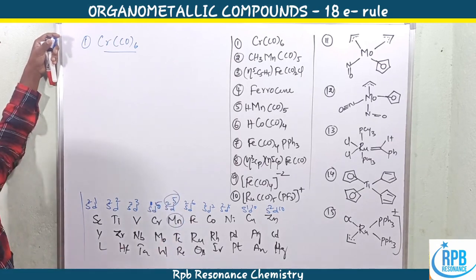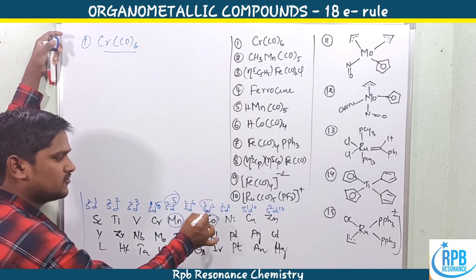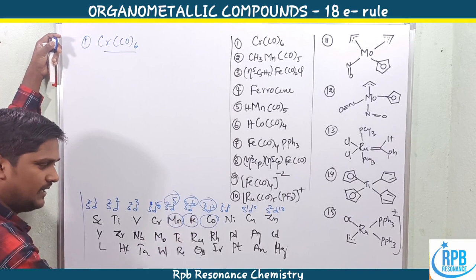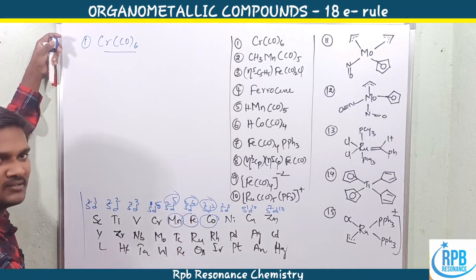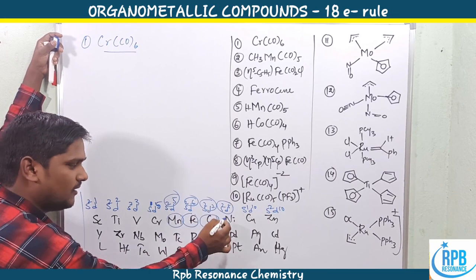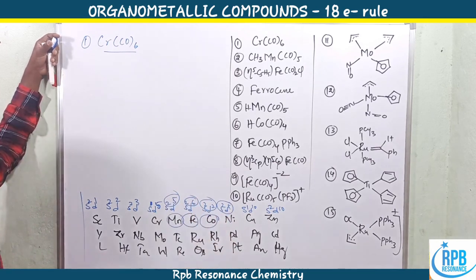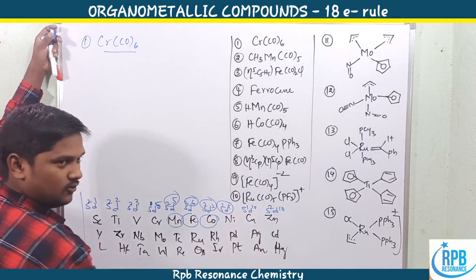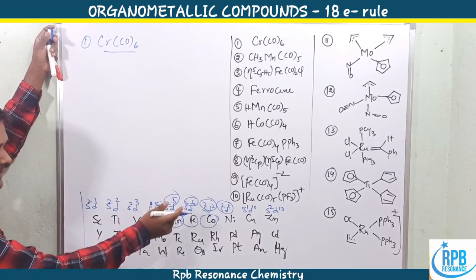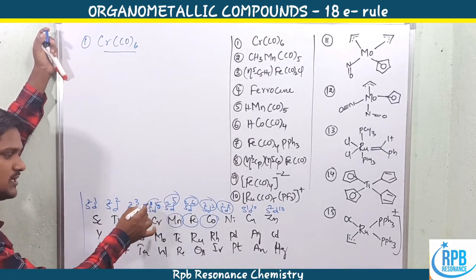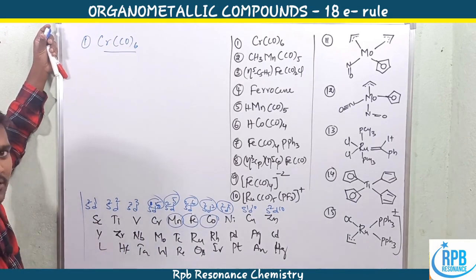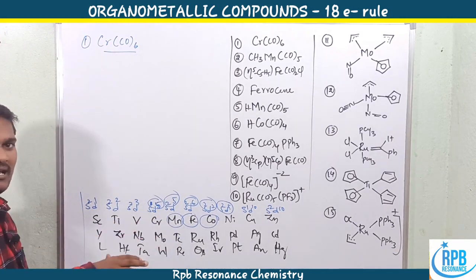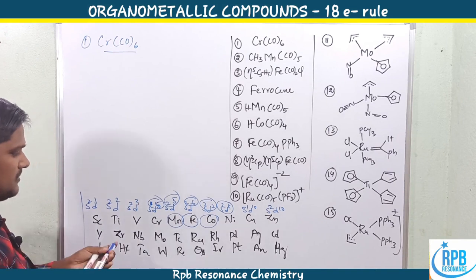s²d⁸ for nickel, and s²d⁹ for copper, but originally one electron is taken from the s orbital to give the filled configuration s¹d¹⁰, then s²d¹⁰ for zinc. So if manganese is present, we take s²d⁵ — that is 7 electrons. If cobalt, s²d⁷ — 9 electrons. If iron, s²d⁶ — 8 electrons. Nickel-palladium-platinum: 10 outermost electrons. Copper-silver-gold: 11. Manganese-technetium-rhenium: 7. Chromium-molybdenum-tungsten: 6 outermost electrons.